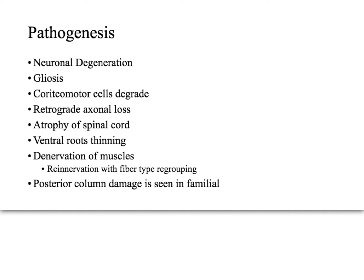Most of the time, ALS is going to be both an upper motor neuron disease and a lower motor neuron disease. The main cause of it is unknown. It presents with neural degeneration and gliosis, and it damages only the motor neurons — specifically the corticomotor cells and the corticospinal tract.